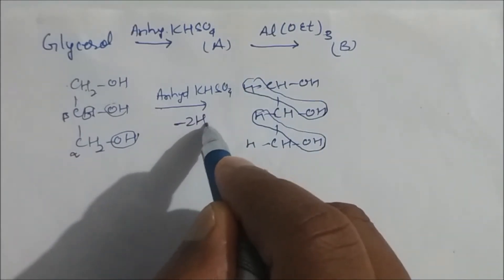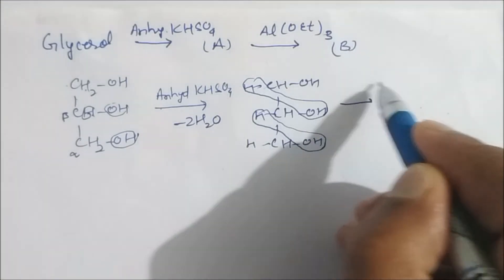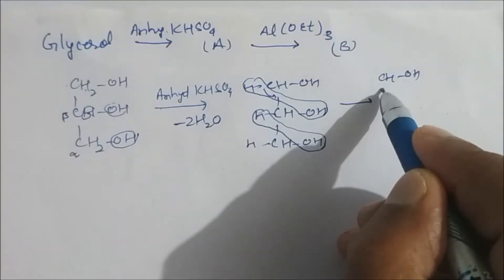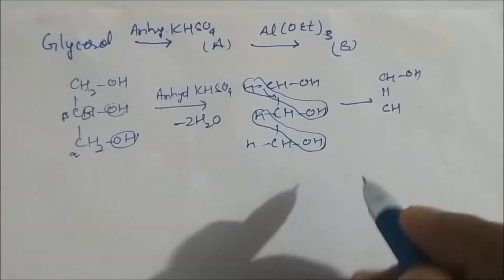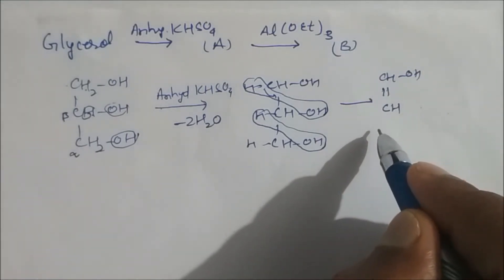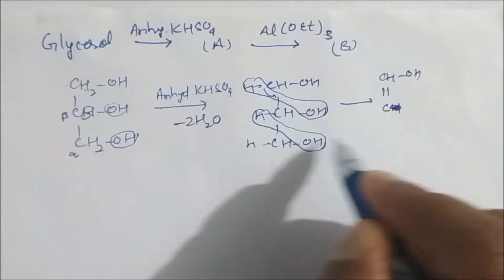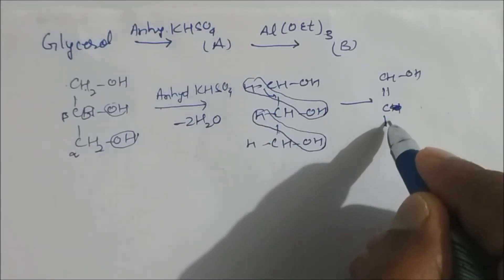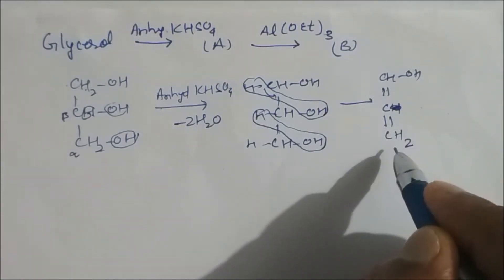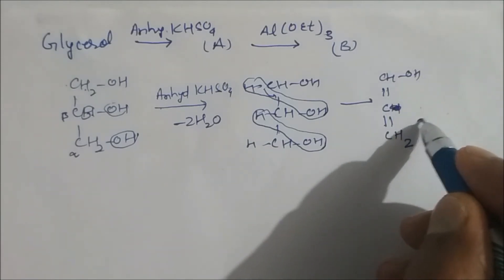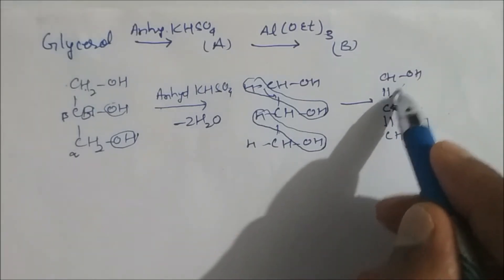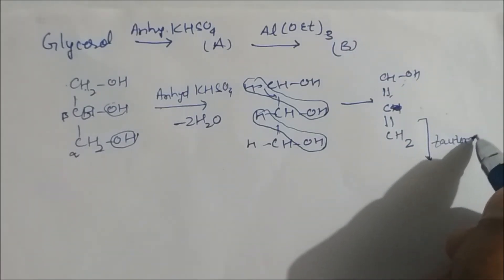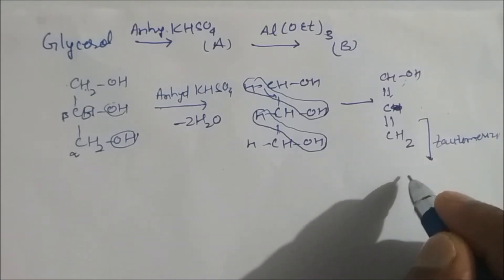After losing −2H₂O, we get a compound with CHOH. This bond shifts to form a double bond, giving CH. However, since hydrogen also eliminates, this bond shifts to give CH₂. Looking carefully, this is your enol — you can see the double bond E and O — so it will undergo tautomerization.